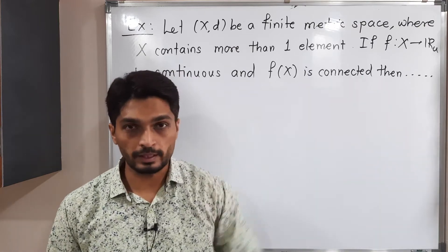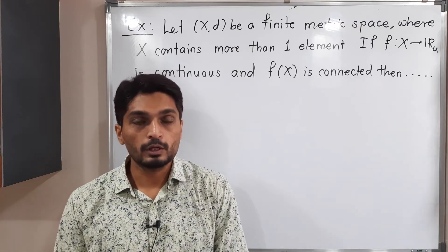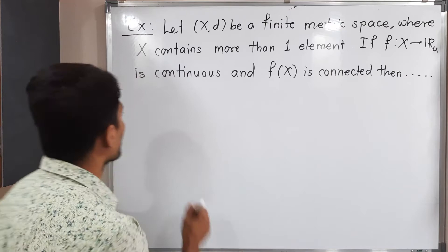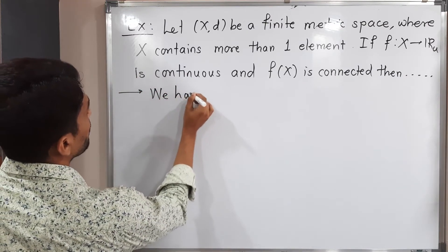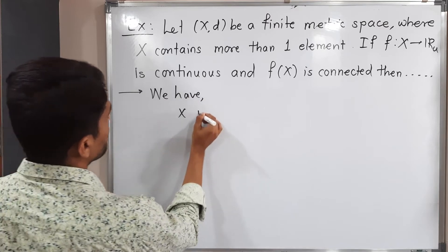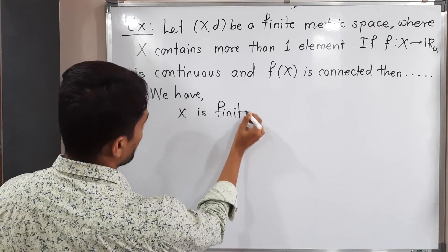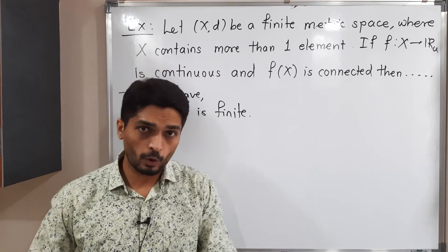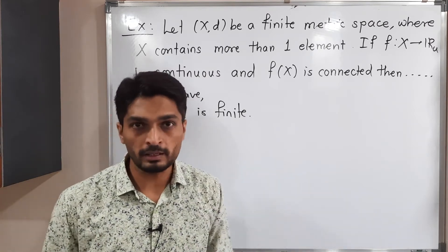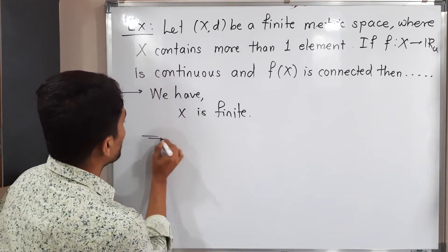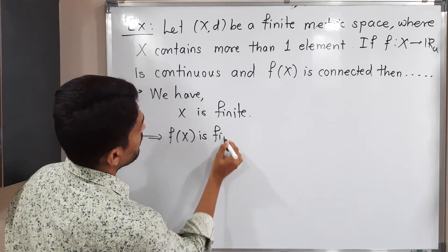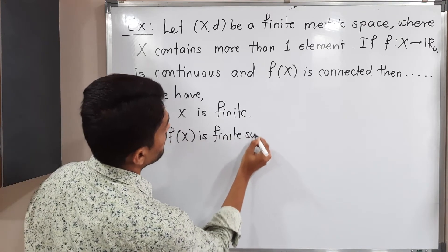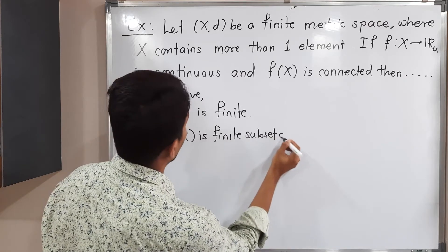This is our problem. Let us start with the given information. Let me write: we have X is finite. If you operate a function on a finite set, the image set will be finite. So this implies f(X) is finite.